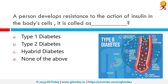When a person develops resistance to the action of insulin in the body cells, it is known as Type 2 Diabetes. Diabetes mellitus type 2 is a long-term metabolic disorder characterized by high blood sugar, insulin resistance, and relative lack of insulin. Common symptoms include increased thirst, frequent urination, unexplained weight loss, increased hunger, feeling tired, and sores that do not heal.